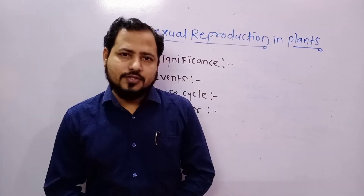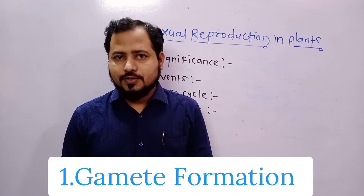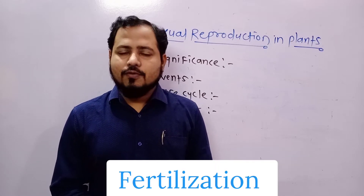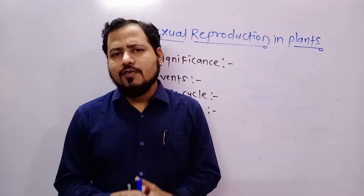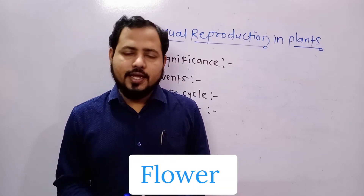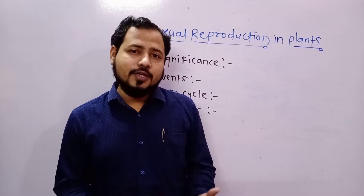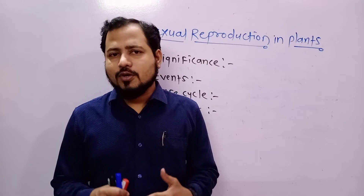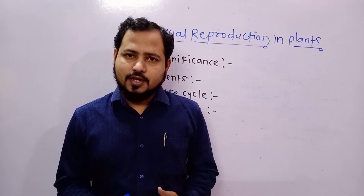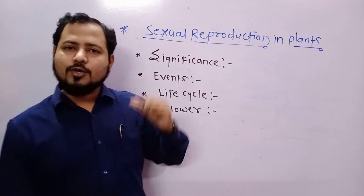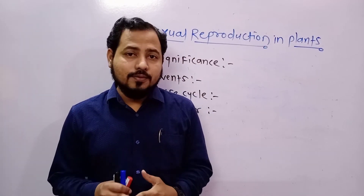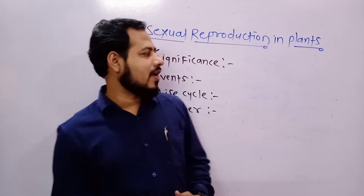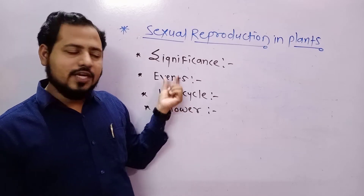There are only two steps in sexual reproduction. Number one: gametogenesis, means gamete formation. In a flower, there are sexual whorls like androecium and gynoecium which produce the respective gametes which fuse together to form a new life — that is the process of fertilization. So sexual reproduction has only two major events: number one, gamete formation; and number two, their fusion, that is fertilization, to form new life.